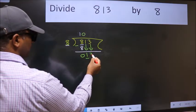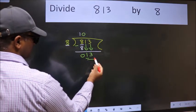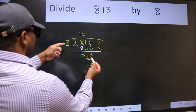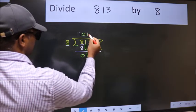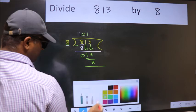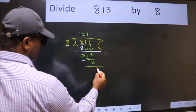Then only we can bring this number down. So, 13. A number close to 13 in the 8 table is 8 once is 8. Now we subtract. We get 5.